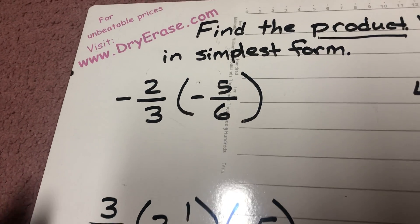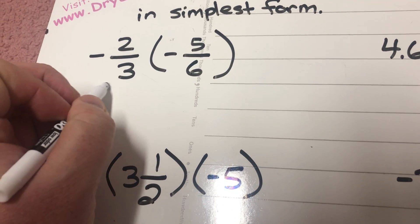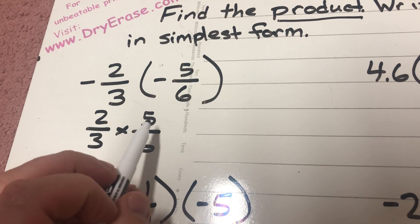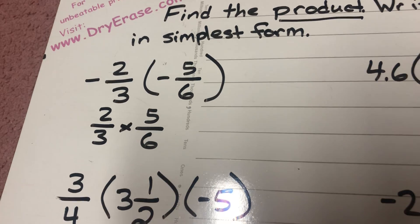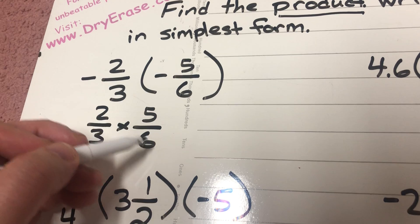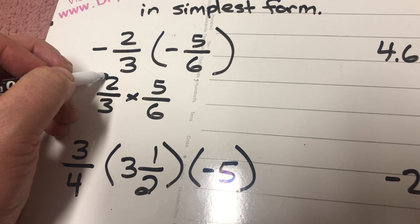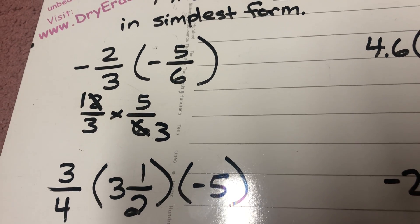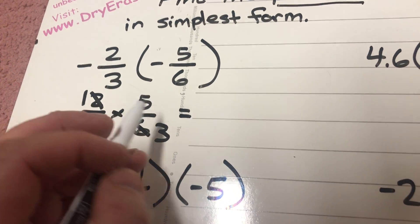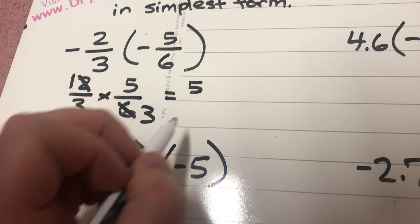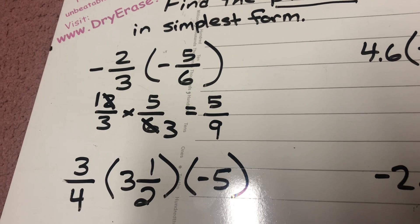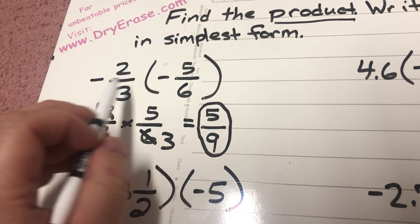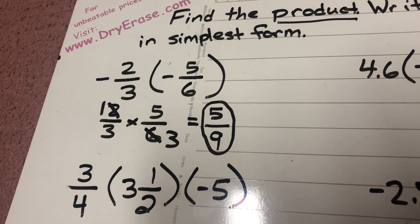So I can pretend for the time being that the negative signs are not there and just do two-thirds times five over six. I can't cross-check a three and a five — nothing can go into both three and five other than one — but I can cross-check a two and a six because both are divisible by two. Two divided by two is one, six divided by two is three. Then I do the multiplication: one times five is five, three times three is nine. That's in simplest form because no number besides one can go into both five and nine. Since both numbers were negative, my answer is a positive five over nine.